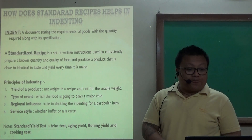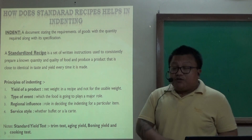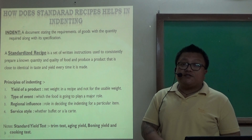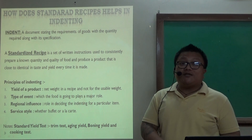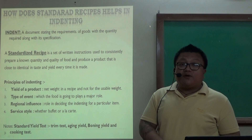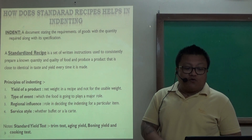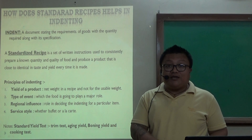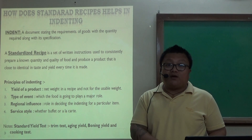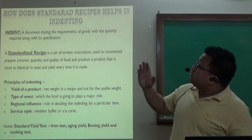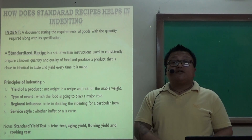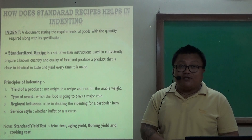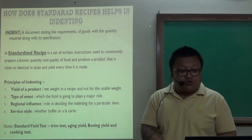A standard recipe is very important here because a standard recipe finalizes or fixes things — it is a written instruction used to consistently prepare a known quality and quantity of food and produce a product that is close to identical in taste and yield every single time you prepare a dish. A standard recipe is itself a set of written instructions that we follow every single time.